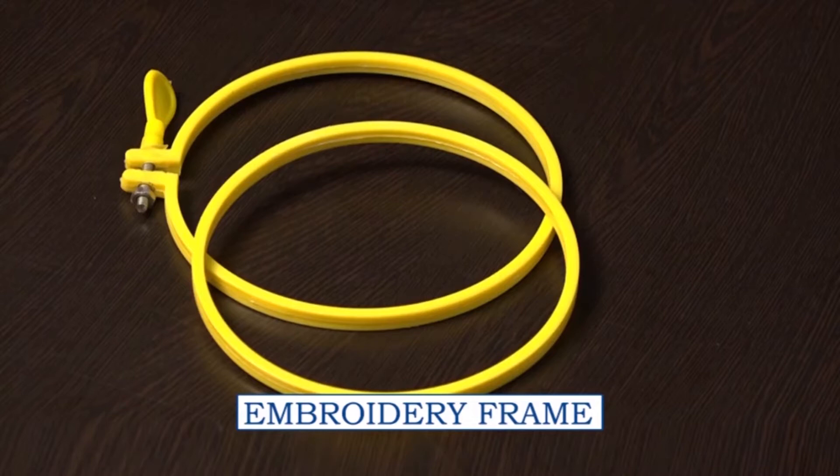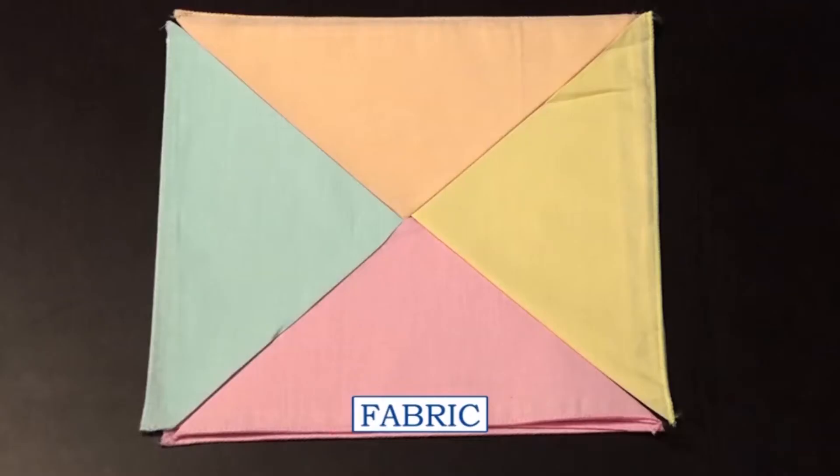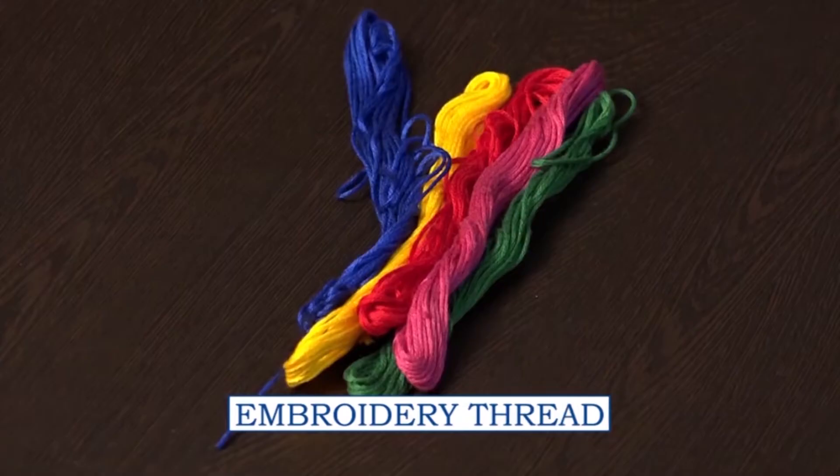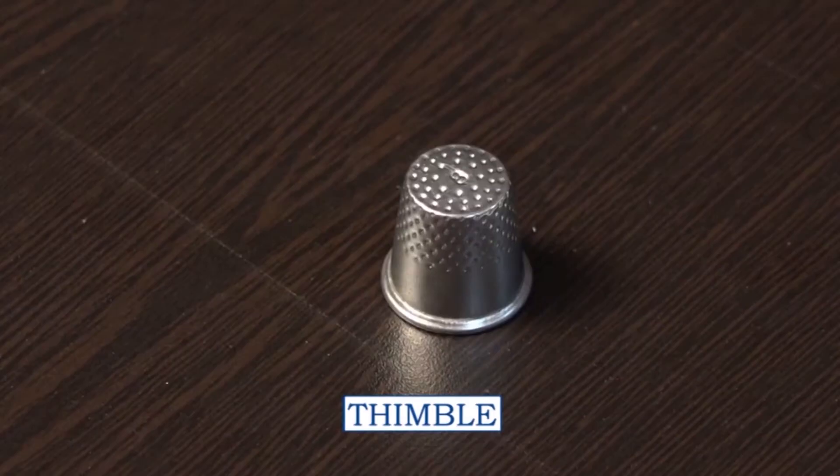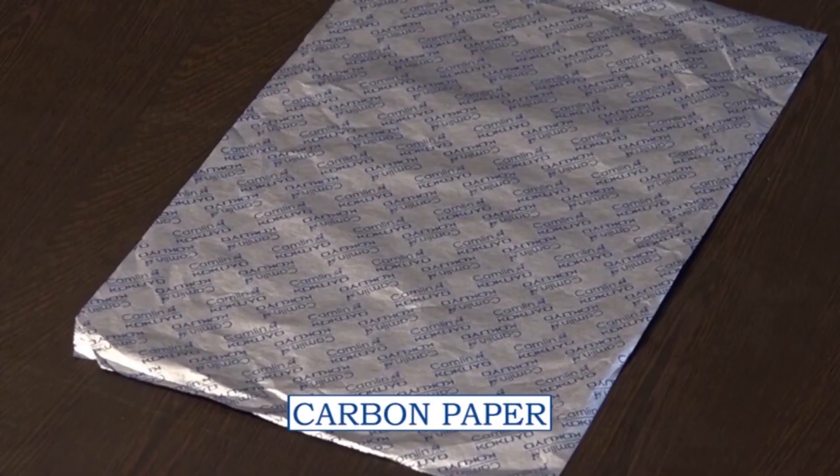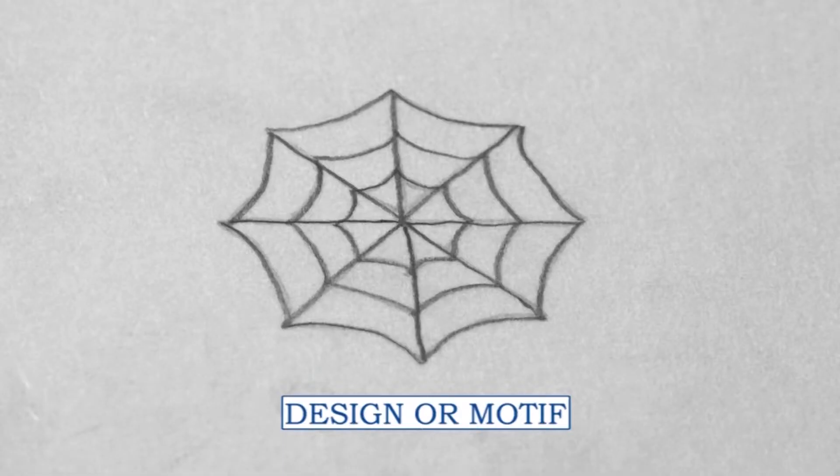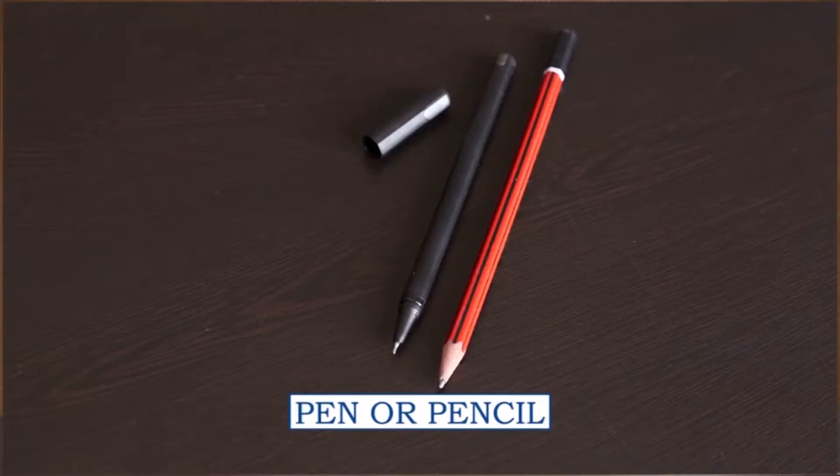Before starting embroidery, we require some materials: embroidery frame or hoop, fabric (which should be clean, starch-free, and ironed), embroidery needle, embroidery thread or floss, thimble, thread clipper or scissors, carbon paper, design or motif traced on butter paper, and pen or pencil.